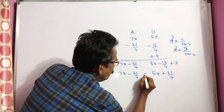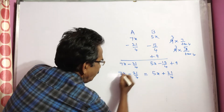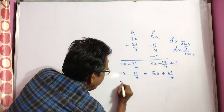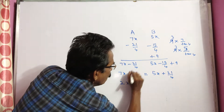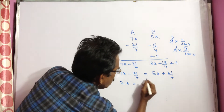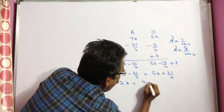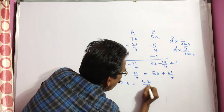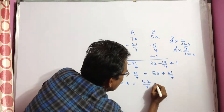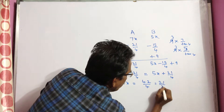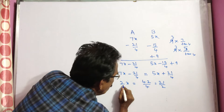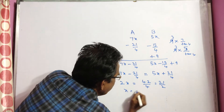So we set them equal: 7x minus 21/4 equals 5x plus 21/4. That gives 2x equals 42/4, which is equal to 21/2. So 2x equals 21/2.